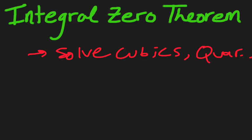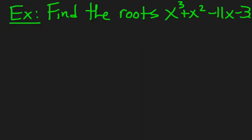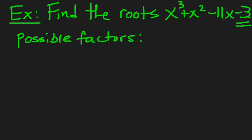So let's do an example and see if we can't get the hang of how we do this. So the first step with the integral zero theorem is to look at our last term, our constant. And what we want to do is list out the possible factors of this cubic. So the possible factors come from that number. So the possible factors are the factors of 3, plus or minus 1 and plus or minus 3.